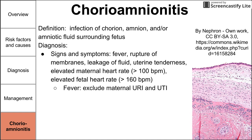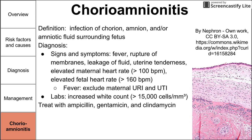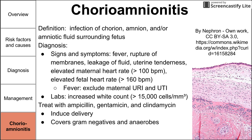If fever is present, rule out a UTI or URI in the mother before diagnosing chorio. Lab values supporting the diagnosis include a white blood cell count over 15,000 to 16,000 cells. Treatment includes ampicillin, gentamicin, and clindamycin to cover gram-negative and anaerobic organisms from vaginal flora. Delivery is also warranted and is usually induced with oxytocin. Patients should be afebrile for 24 hours before discharge to confirm the infection has resolved.